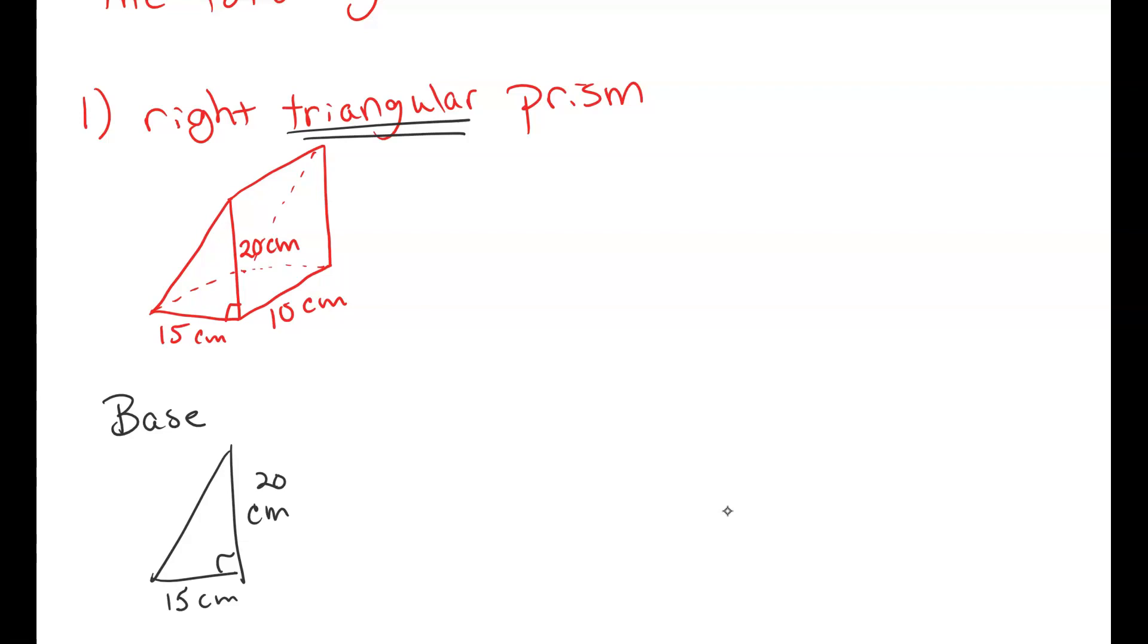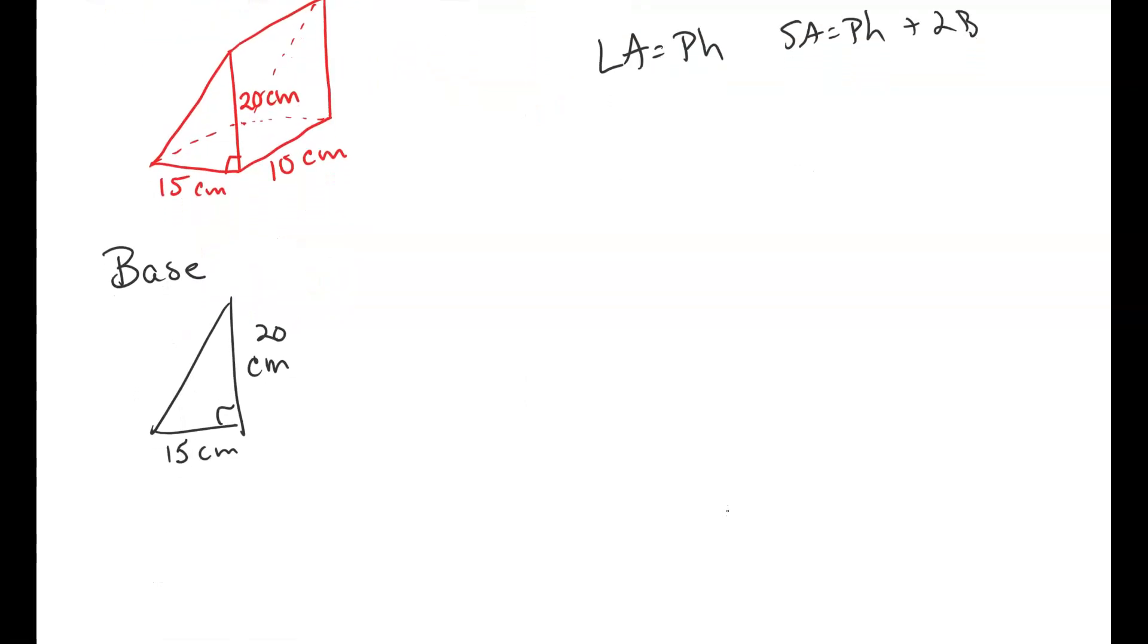So with this, we have to go ahead and solve for its perimeter, right? Because we're doing a prism, and we know lateral area is perimeter of the base times the height. Surface area is perimeter of the base times the height plus two times the area of the base. So let's go through and let's make sure we do this.